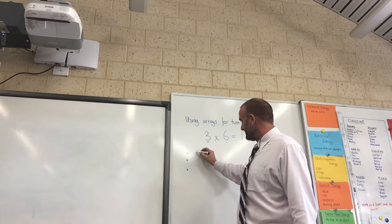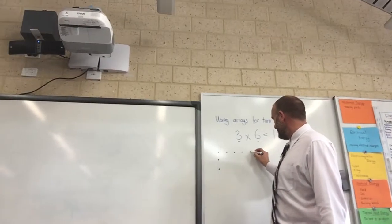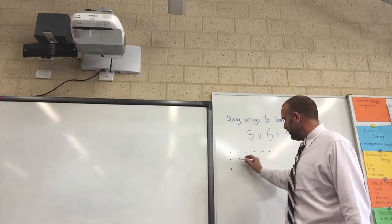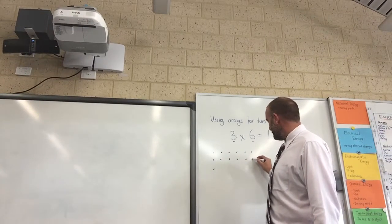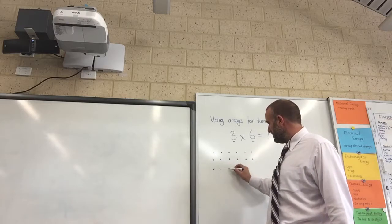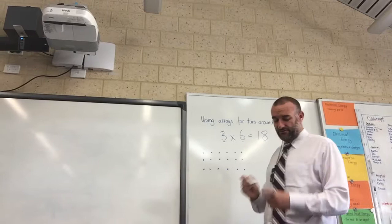3 lots of 6. 1, 2, 3, 4, 5, 6 - that's 1 lot of 6. 1, 2, 3, 4, 5, 6 - 2 lots of 6. 3 lots of 6.